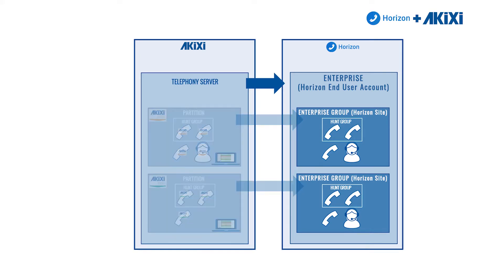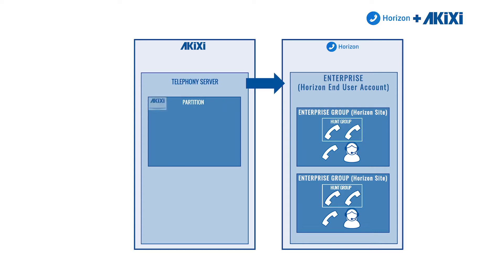Now we've looked at connecting partitions to enterprises and enterprise groups. Let's look at how to connect to both from within the same telephony server. We're going to create a first partition to connect to the entire enterprise, allowing monitoring of all entities within it. However, because we're only interested in reporting historically, we're going to apply an Akixi Lite site license.